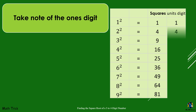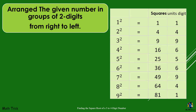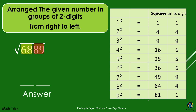Take note of the unit digits. To find the square root, arrange the given number in groups of 2 digits from right to left. The number of digits in the square root will be the same as the number of groups. For example, in the number 6,889, there are 2 groups of figures: 68 and 89, so we expect a 2-digit answer.